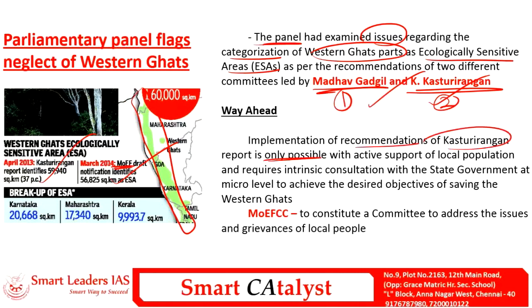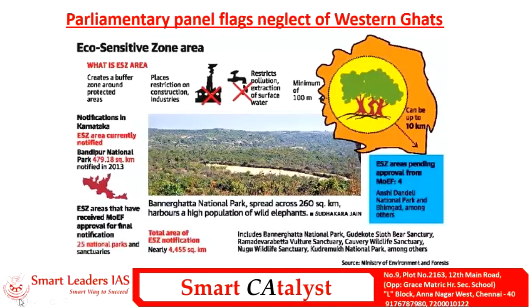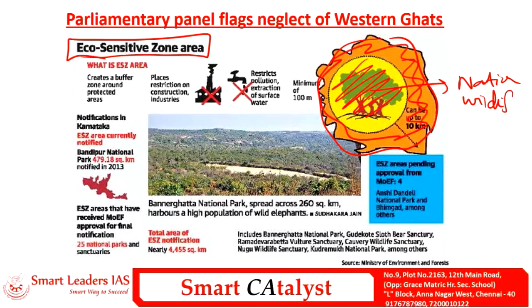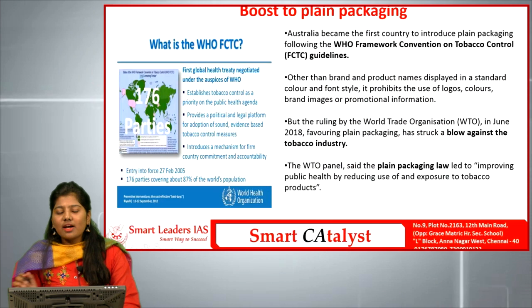Implementation of the Kasturi Rangan report recommendations is possible only with active support of the local population and intrinsic consultation with state governments at the micro level. The Ministry of Environment is going to constitute a committee to address the issues and grievances of local people living in the ecologically sensitive area. An eco-sensitive zone is a buffer zone around protected areas such as national parks or wildlife sanctuaries, extending up to 10 kilometers. In these zones, restrictions are placed on construction, industrial activities, pollution, and extraction of surface water. Bandipore National Park has recently been notified as an eco-sensitive zone by the Karnataka government.